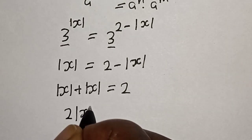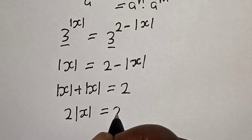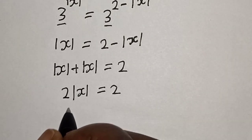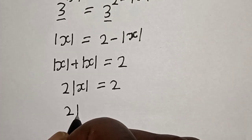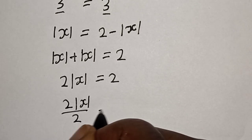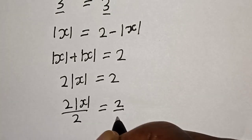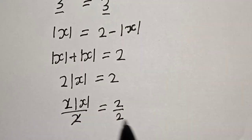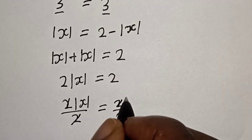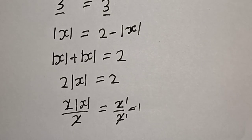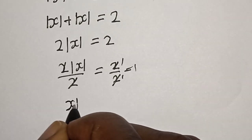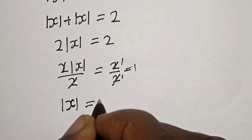Now let's divide both sides by 2: 2 times absolute value of s divided by 2 is equal to 2 divided by 2. The 2s cancel, giving us absolute value of s is equal to 1.